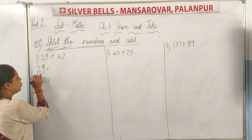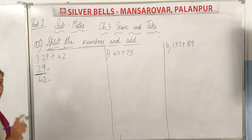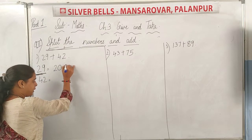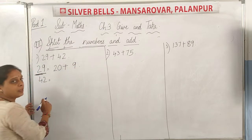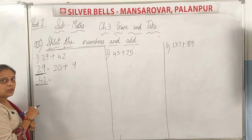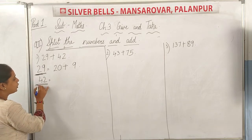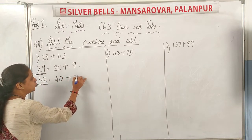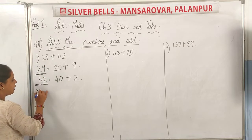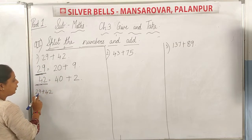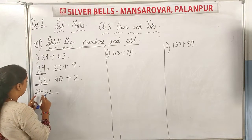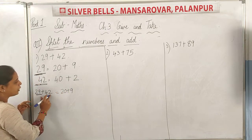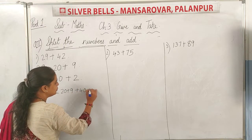You split according to the number name. For example, 29 — its number name is twenty-nine, so you split it as 20 plus 9. The next number is 42 — its number name is forty-two, so you split it as 40 plus 2.